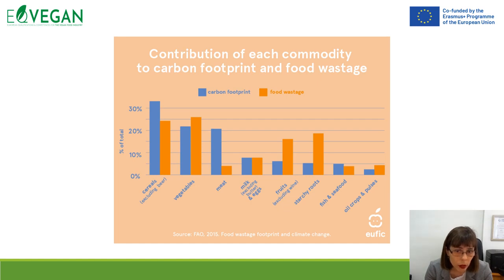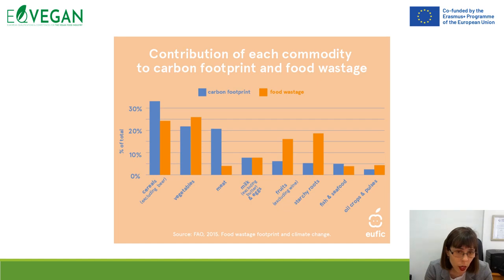For example, fruits show a low carbon footprint, as do oil crops and pulses. On the other hand, in production we can see a large percentage of carbon footprint and also a large percentage of food wastage when dealing with cereals and vegetables.